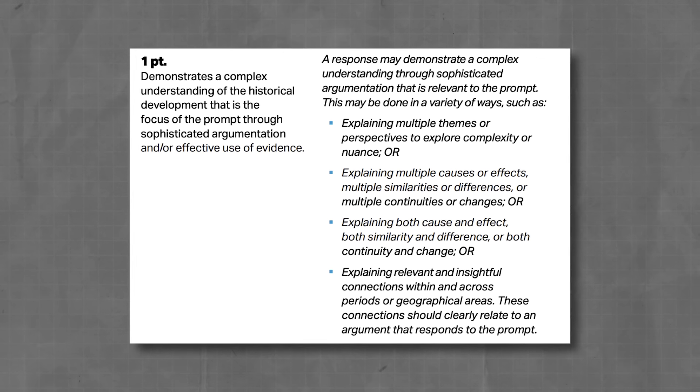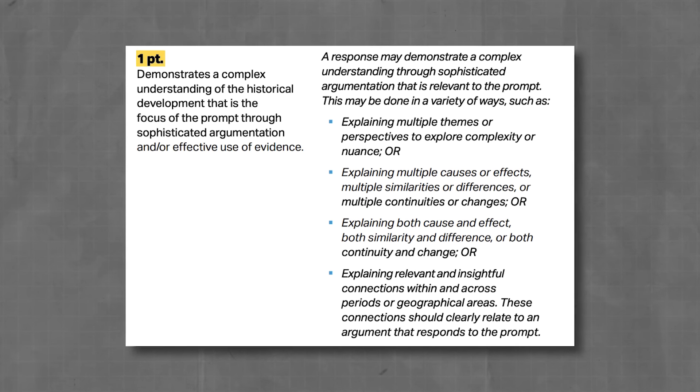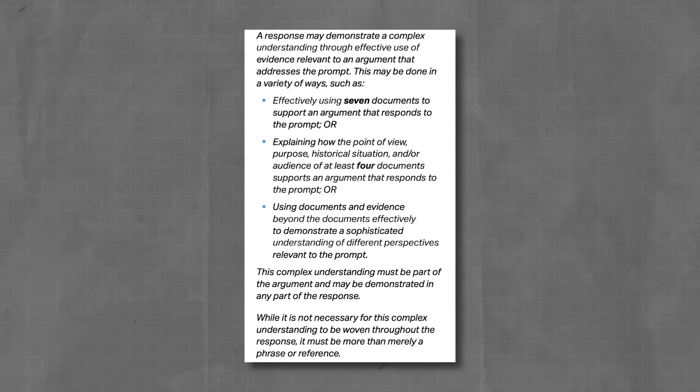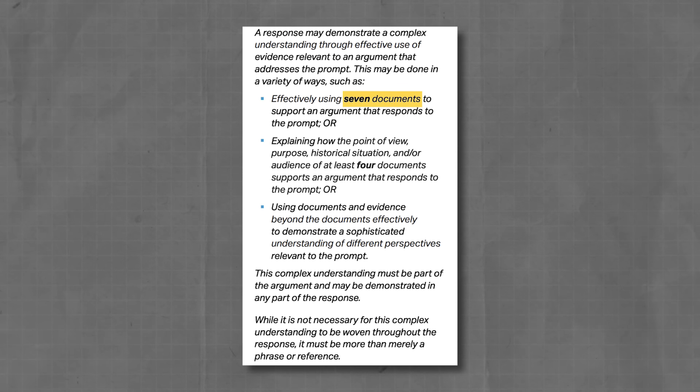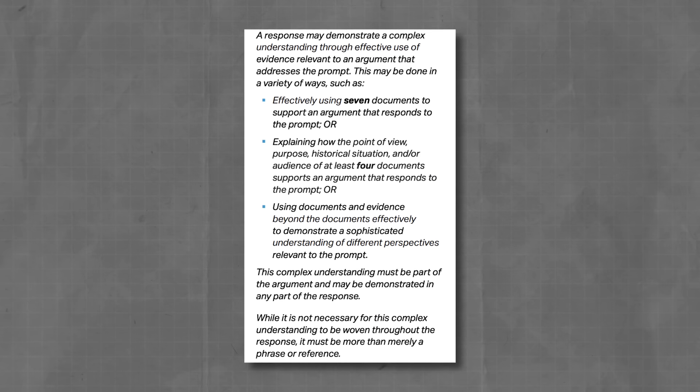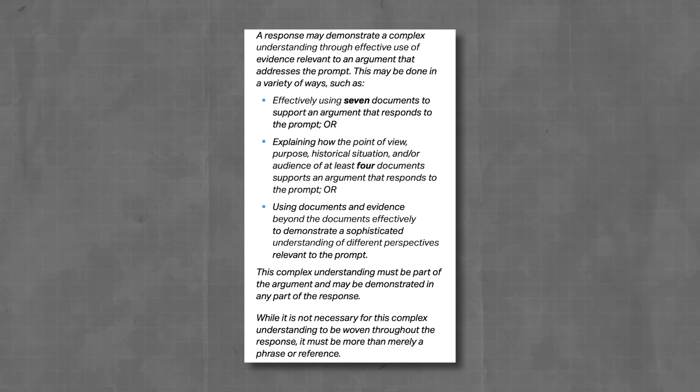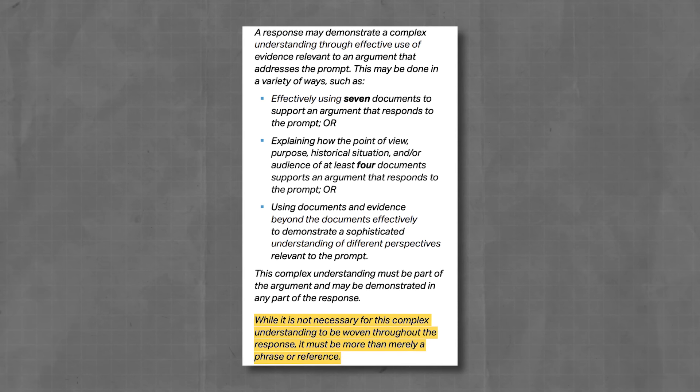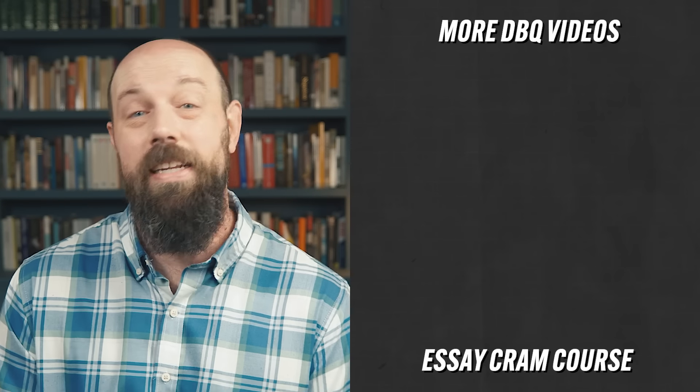The final part of the rubric is for complexity — one point. The rubric gives seven different ways to earn it, but here are the two most straightforward. First, you can earn complexity by successfully using all seven documents to support your thesis — it doesn't have to be fancy. If you do for all seven documents what you did for those four in the evidence section, you get the complexity point. Second, you can earn complexity by sourcing four documents instead of two — same skill, just done two more times. Remember, the complexity point can be awarded for just part of the essay, so a well-crafted paragraph demonstrating a complexity skill is sufficient.